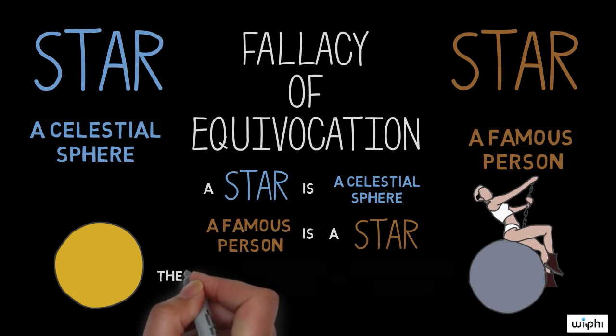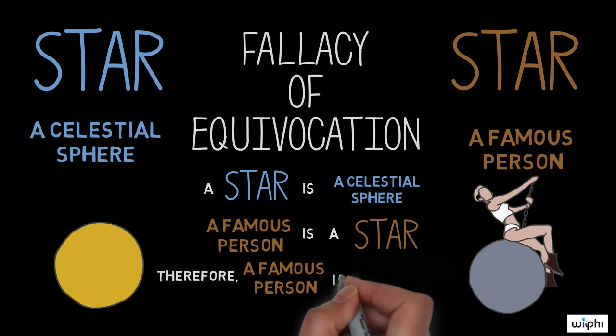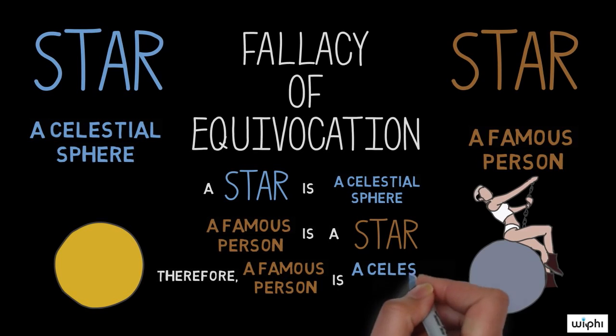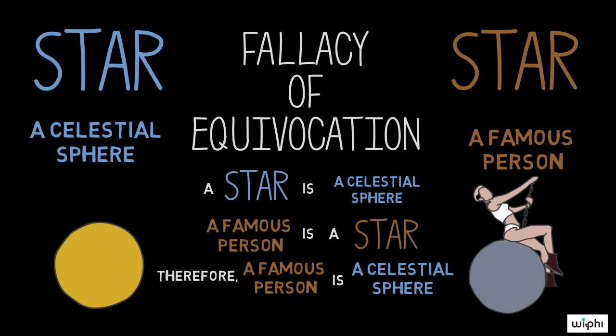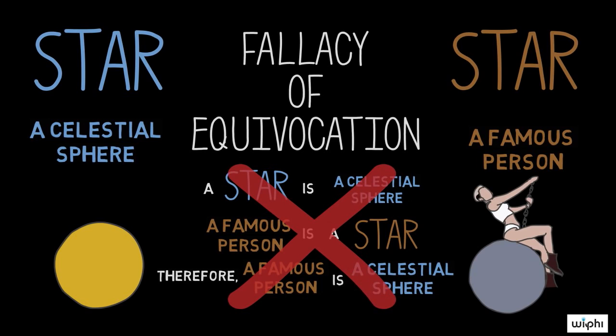The arguer is committing a fallacy because he or she uses the word as if that word had the same meaning, and so the argument will appear to be valid even though it actually is not.